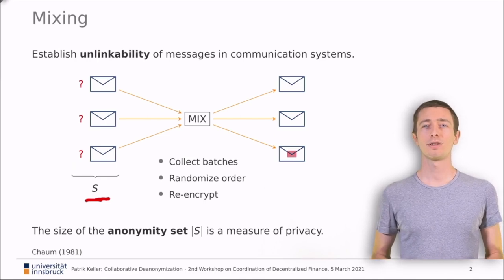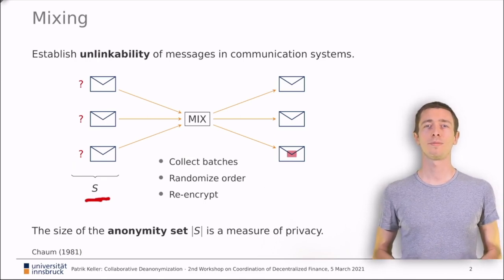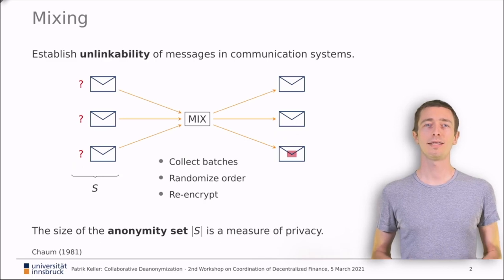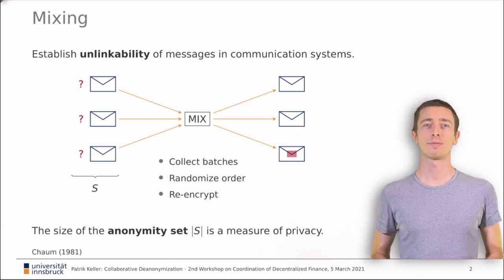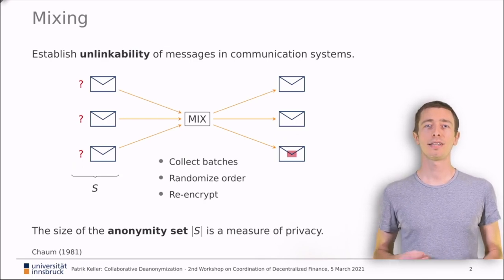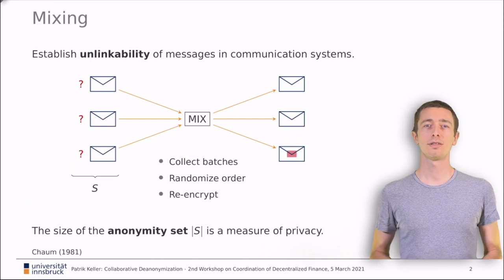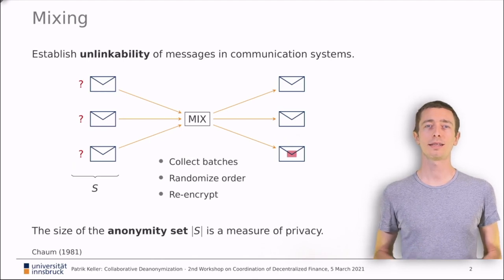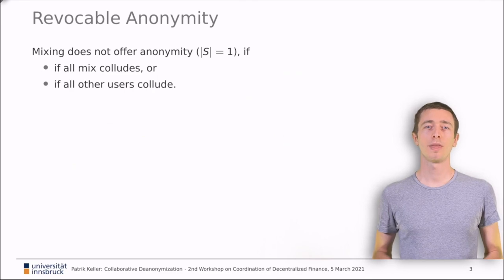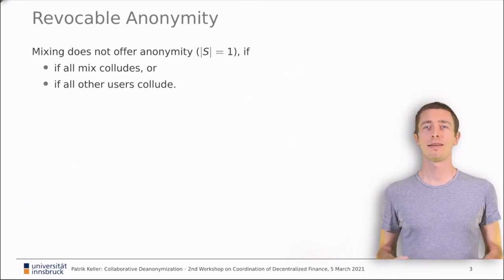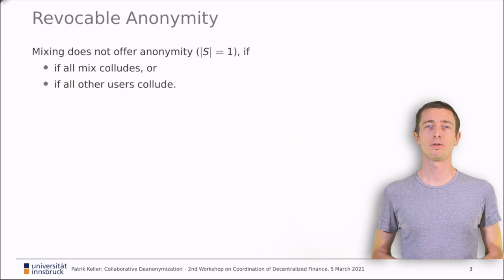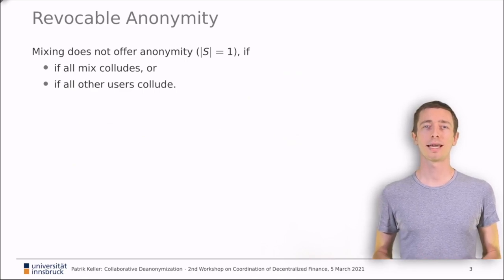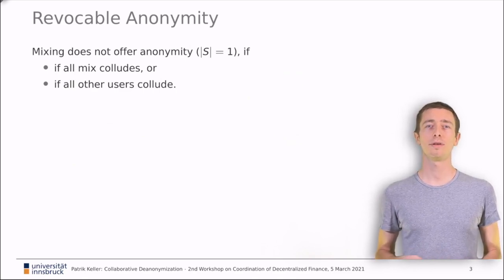But increasing the batch size is not the only way to improve anonymity. Instead, one can also use multiple mixes in sequence or how we call it a cascade of mixes. Cascades have the additional benefit that anonymity seekers do not have to rely on a single mix or mixing server. So now, how can we revoke anonymity in this setting? Mixing does not offer anonymity. We say the anonymity set size drops to one if either all the mixes of the cascade collude or all other users collude.